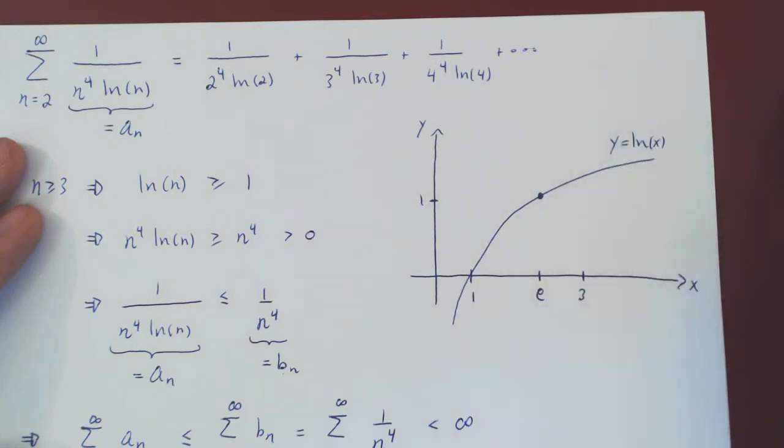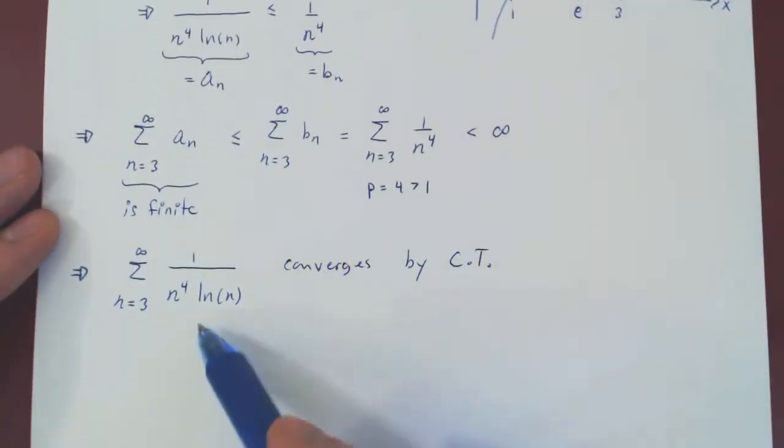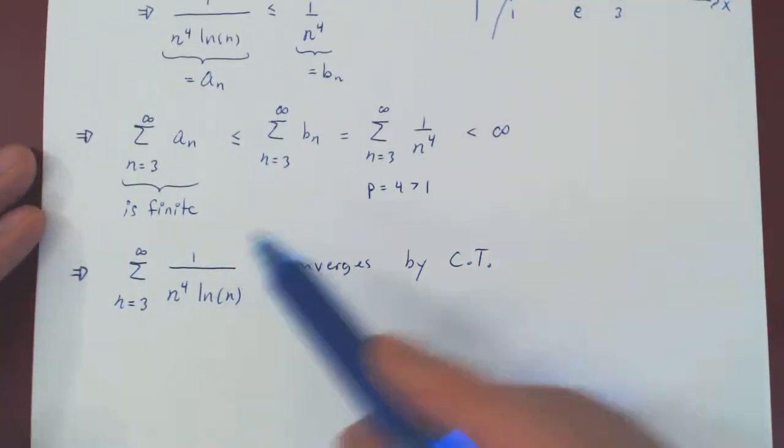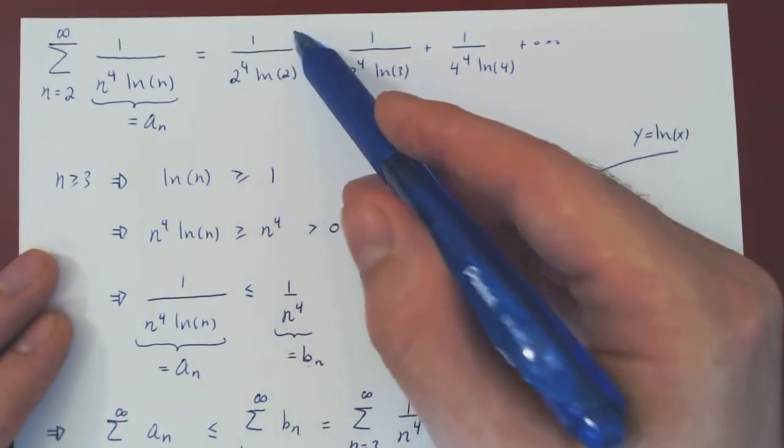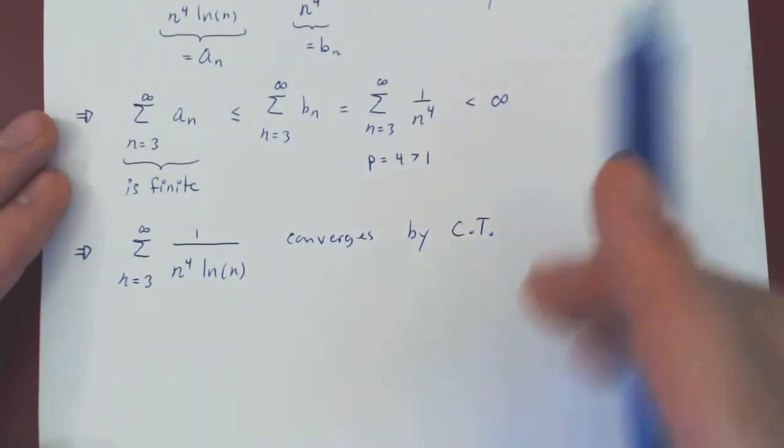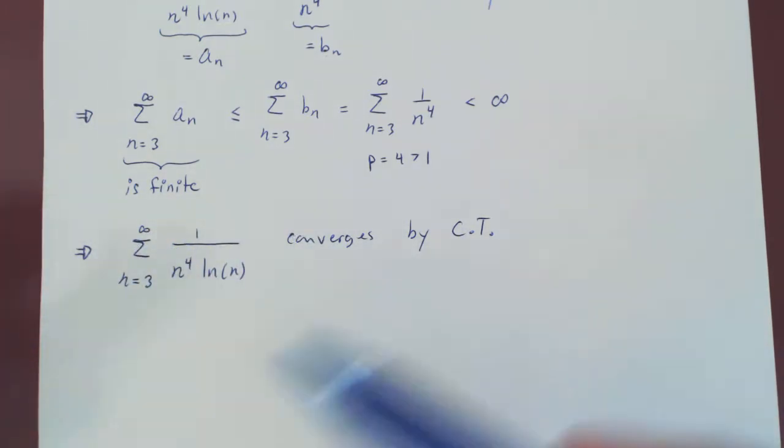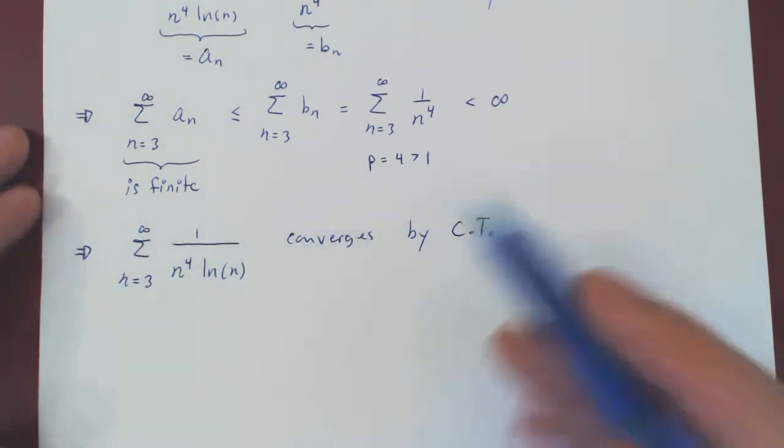So, if the remaining series converges, this is just a real number. Well, we can clearly add to it the first term. And if we add the first term to this real number, the result, of course, is a real number, as this series converges.